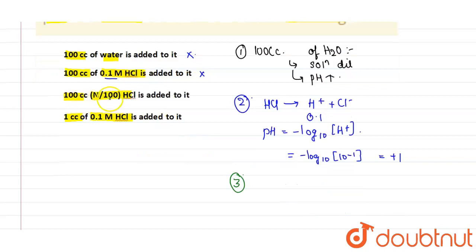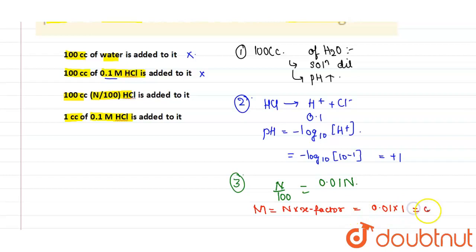Here 100 cc of N by 100, which means 0.01 N. Now we need to calculate the molarity. Molarity equals normality times X factor, which is 0.01 times 1, as the number of electrons changing is 1. So the molarity is 0.01.